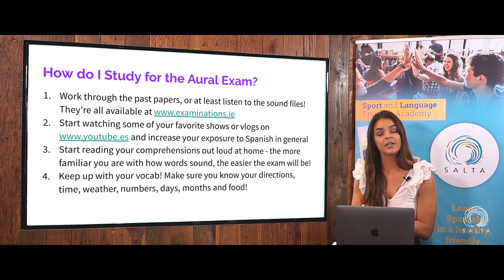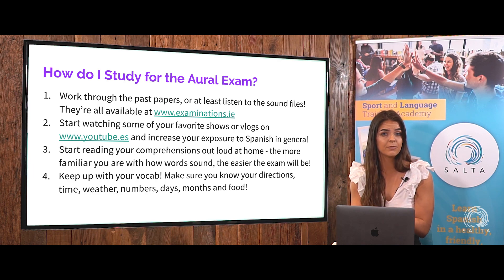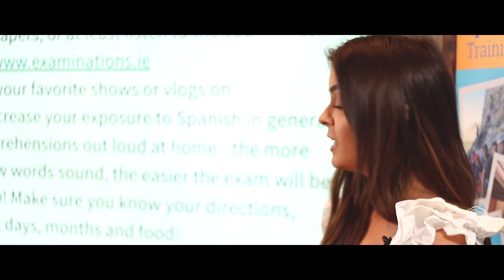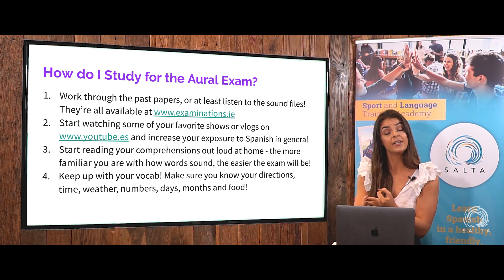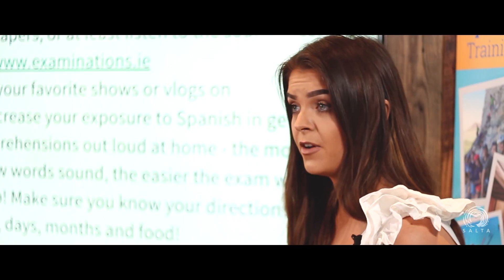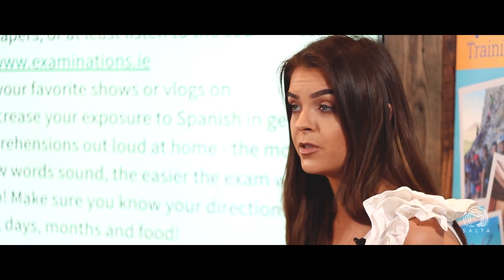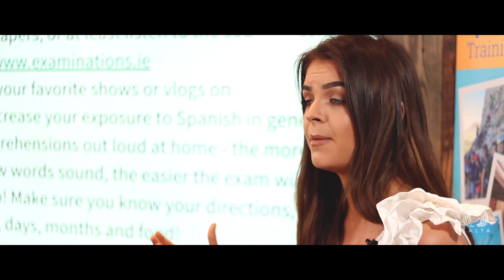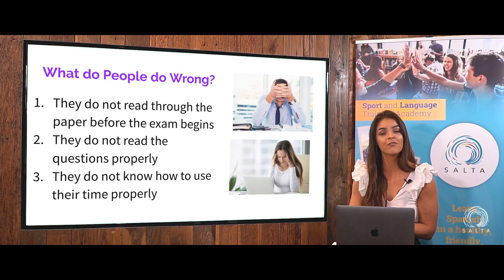Hopefully you've downloaded your notes before this video — on those notes you'll have every piece of vocabulary you need for your aural exam. You need to make sure you know your directions, which is a guaranteed question. Time can often come up as well, and weather is another guaranteed section. General topics that come up a lot include numbers, days, months, and food — really basic vocabulary you can sit and learn. This is where people lose silly marks: they're not familiar with the basic vocab, they panic on the day, and they leave it blank. That is what we are not going to do.